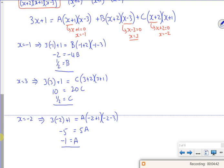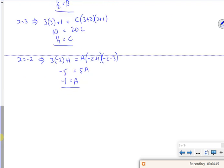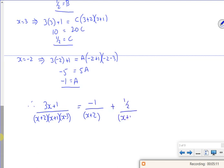Right, so now I need to write it out with all my numbers in the right place now. So 3x plus 1 over x plus 2, x plus 1, x minus 3. So a is minus 1, so that's minus 1 over x plus 2. b is a half, so that's a half of an x plus 1. And c is a half as well, so that's a half of an x minus 3.